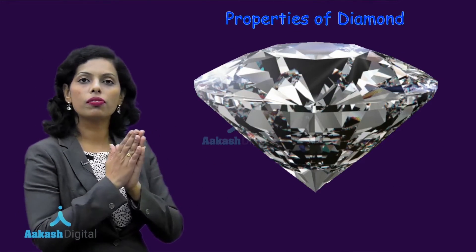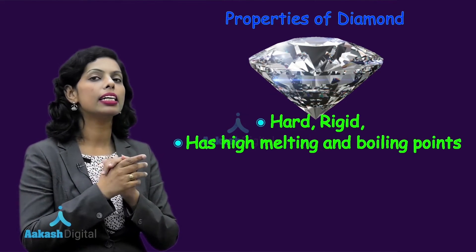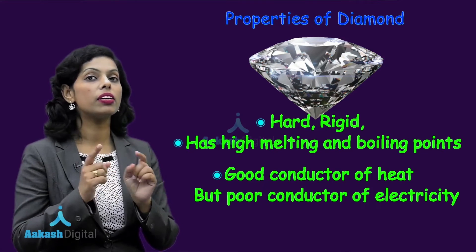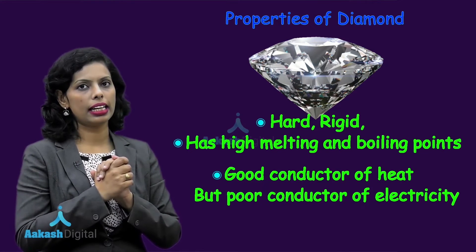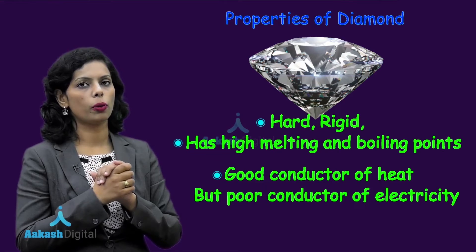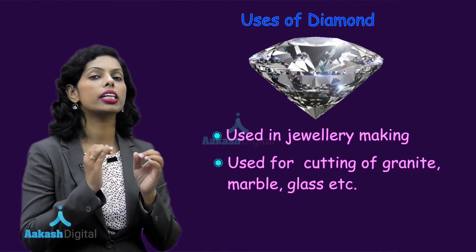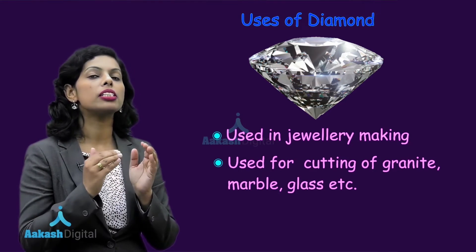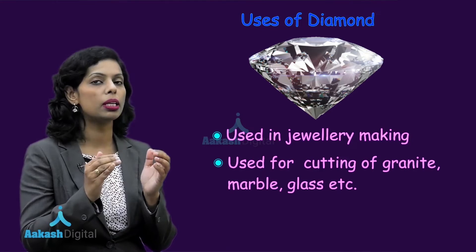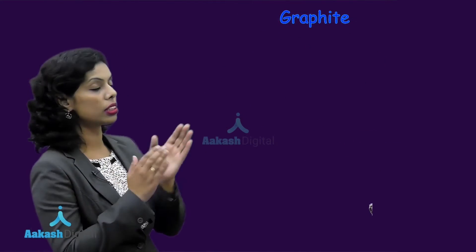We discussed the properties of diamond. Diamond is very hard, it has a high melting point, and it has the nature to conduct heat, but it will not conduct electricity because it does not have free electrons. This diamond, due to its shiny appearance, is used in jewellery making, and due to its sharp edges, it is used for the cutting of granite, marble, and glass.